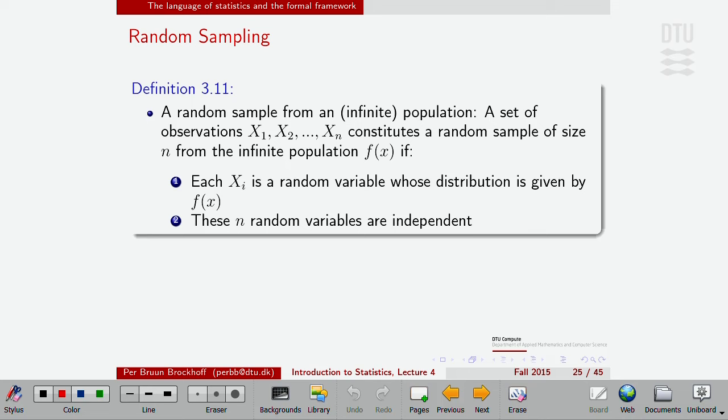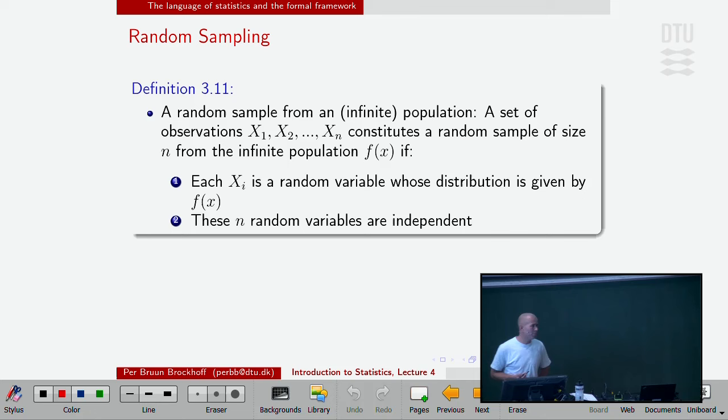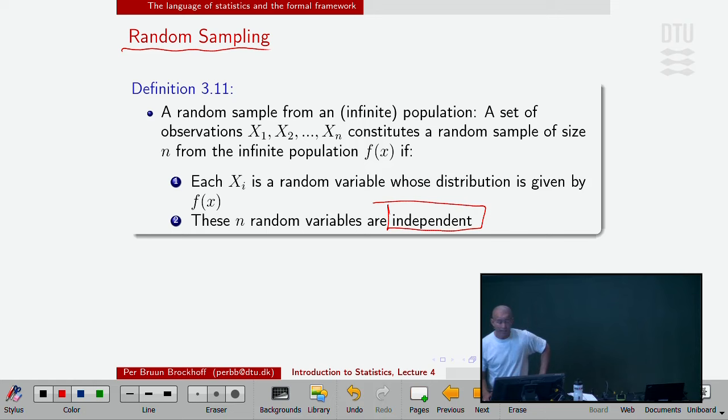We will assume, and then maybe in the beginning of the project we'll think about whether it's okay. We will assume that we have random sampling, and the random sampling is defined by this. Maybe I should just emphasize the word independent is important. Then each piece of information that I have in my data set should be independent from each other. So it's not enough to sample a family.